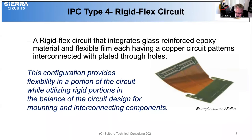Type 4 is a little more complex — now we're getting into rigid flex. The rigid flex can consist of a flexible circuit laminated between two or more layers of epoxy glass circuit sections with plated through holes for interconnect. The configuration provides flexibility in a portion of the circuit while utilizing rigid portions for the balance of the circuit design and for mounting and interconnecting components.